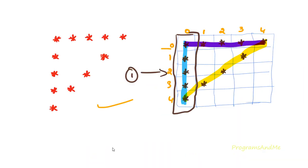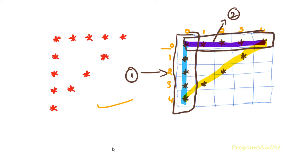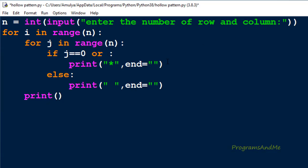Next we move to the second part: we want to print a star in row 0, the first row. So I take the condition as i == 0, that is the first row.